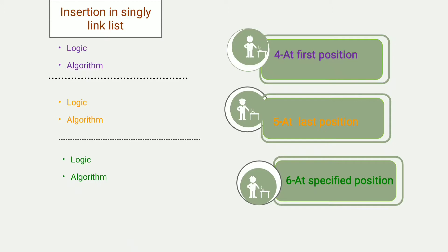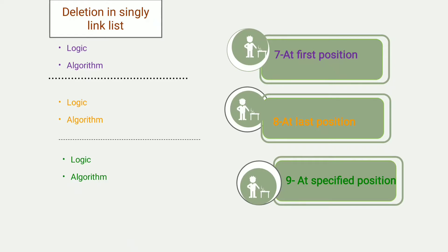In the fourth video we will learn insertion in singly linked list at the first position — first the logic and then the algorithm. Similarly, insertion at the last position will be covered in the fifth video and insertion at a specified position in the sixth video. In the seventh video I will tell you deletion in singly linked list at the first position with logic and algorithm. In the eighth video we will learn deletion at the last position, and in the ninth video deletion at a specified position.